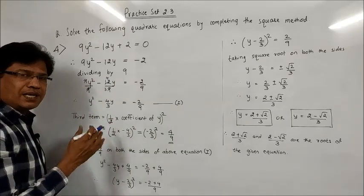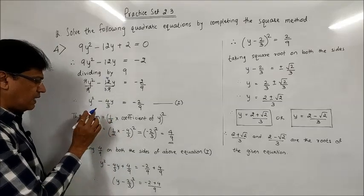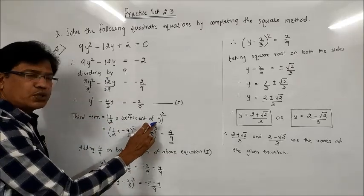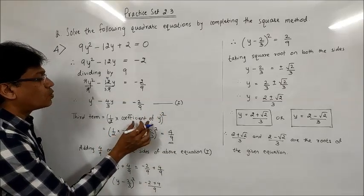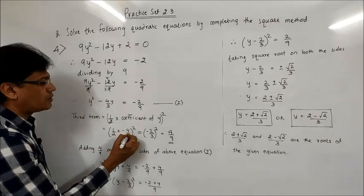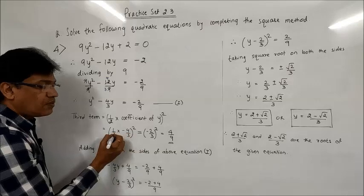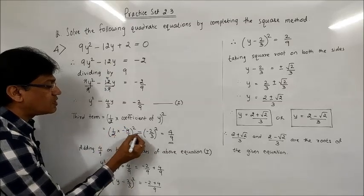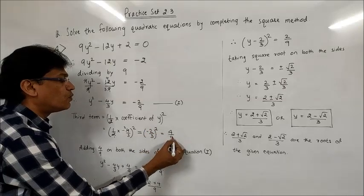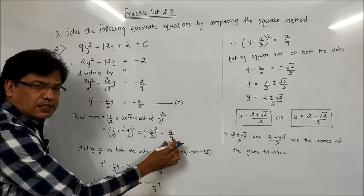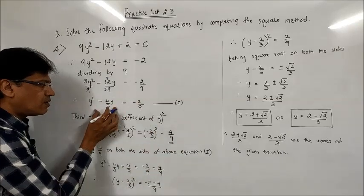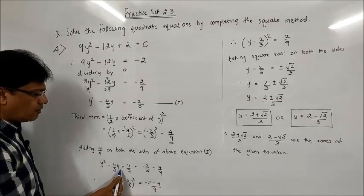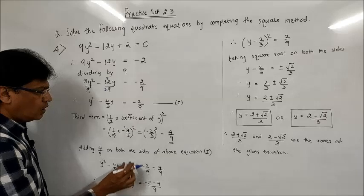Dividing each term by 9: the 9s cancel on the y² term, 12/9 = 4/3, and 9/9 = 1, giving y² - (4/3)y = -2/9. I have now made the coefficient of the square term equal to 1. The next step is to find the third term. The third term is (½ × coefficient of y)². Here the coefficient of y is -4/3, so: (½ × (-4/3))² = (-2/3)² = 4/9.